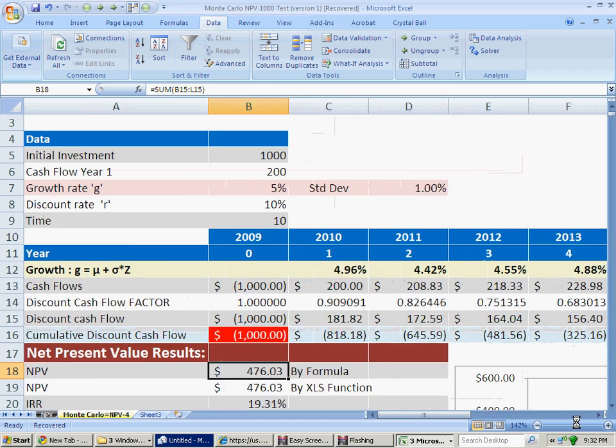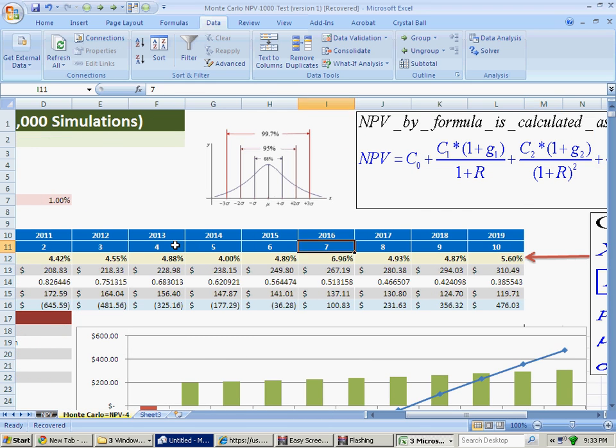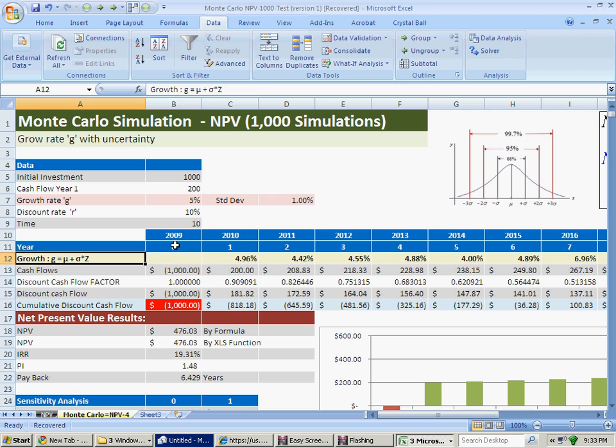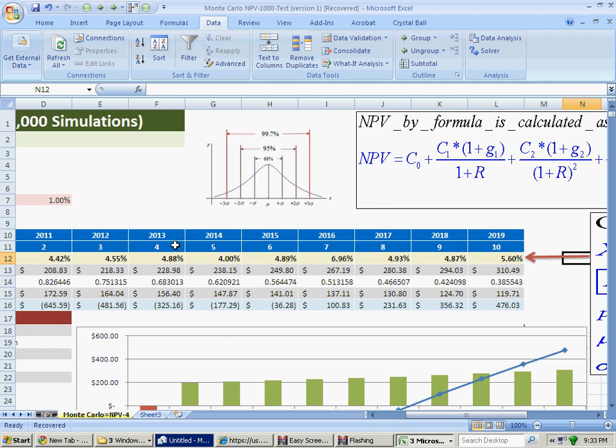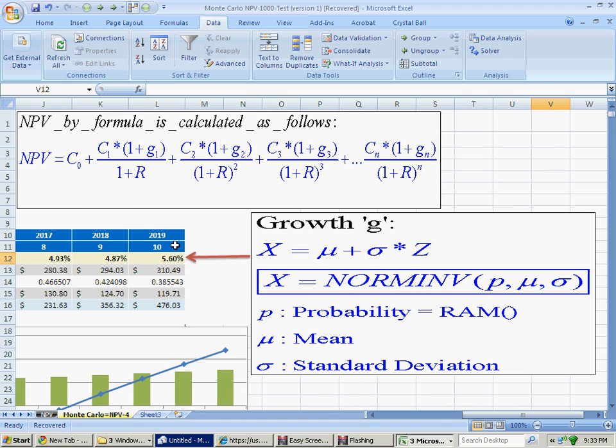Then we have here the table for the net present value. Here we have the years up to 10. Then we have the growth rate. For this particular case, we have to consider a growth rate for the Monte Carlo simulation. I am using the normal distribution,